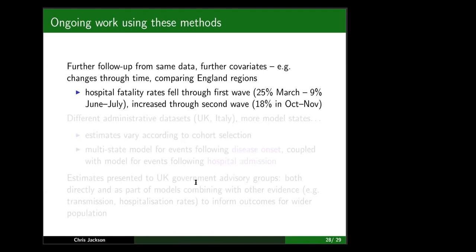This was one specific application to one data set, presented last summer based on the first wave — data collected between March and August with final follow-up. We also looked at changes through time and compared different regions of England. The most striking finding was that hospitalization fatality rates for someone just admitted to hospital fell throughout the first wave, but have since gone back up again judging from further follow-up through October and November. The findings are quite nuanced in terms of different age groups, different regions, and changes through time.